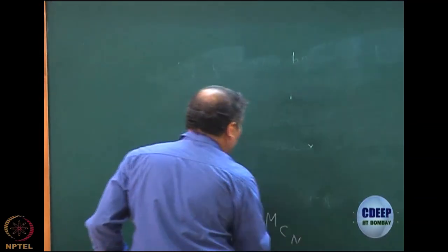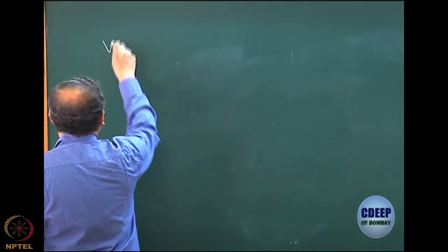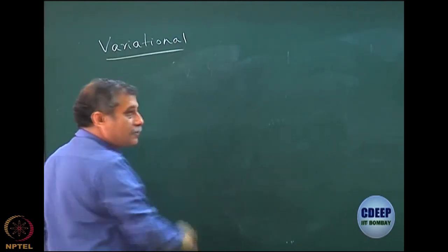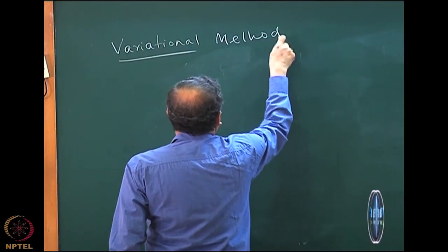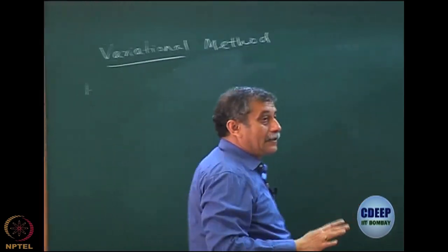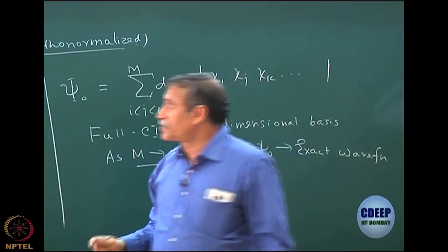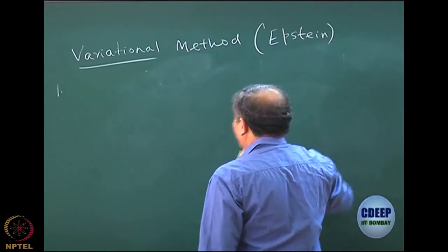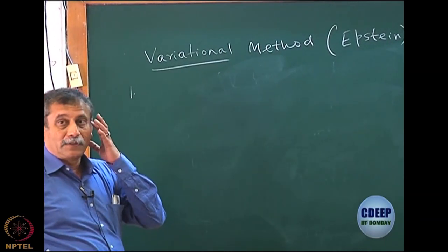There are many parts to the variational method. For those who want to read about it, I refer again to the book by Saul Epstein, 'The Variation Method in Quantum Chemistry.' This is a fantastic book — I think it is downloadable, though I am not sure. I have not found any better textbook on the variational method. If you can go through the first couple of chapters, that may be enough, though the book is quite heavy. It is one of the textbooks that puts the variational method in a very systematic manner.